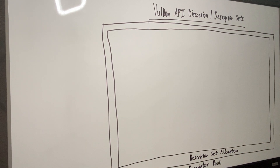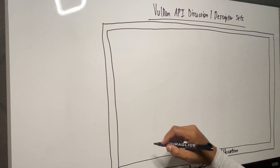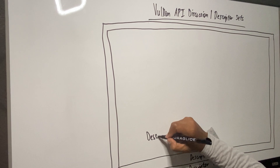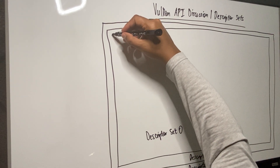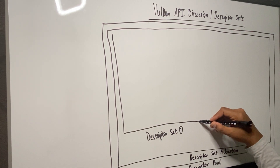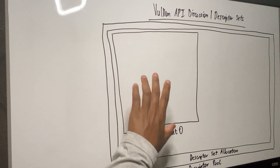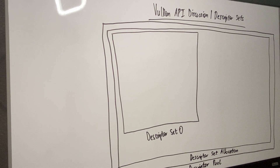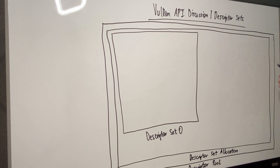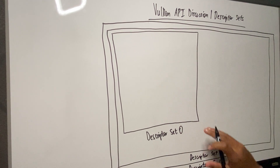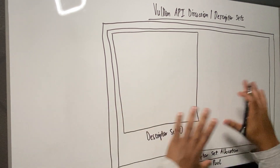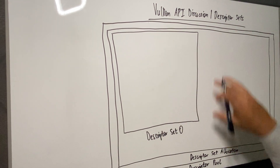This is where things get a little bit more interesting. We're going to allocate some descriptor sets - let's say descriptor set zero. We might also have descriptor set one, descriptor set two, descriptor set three, descriptor set four. Right now let me just focus on descriptor set zero, but understand that you're allocating different descriptor sets.